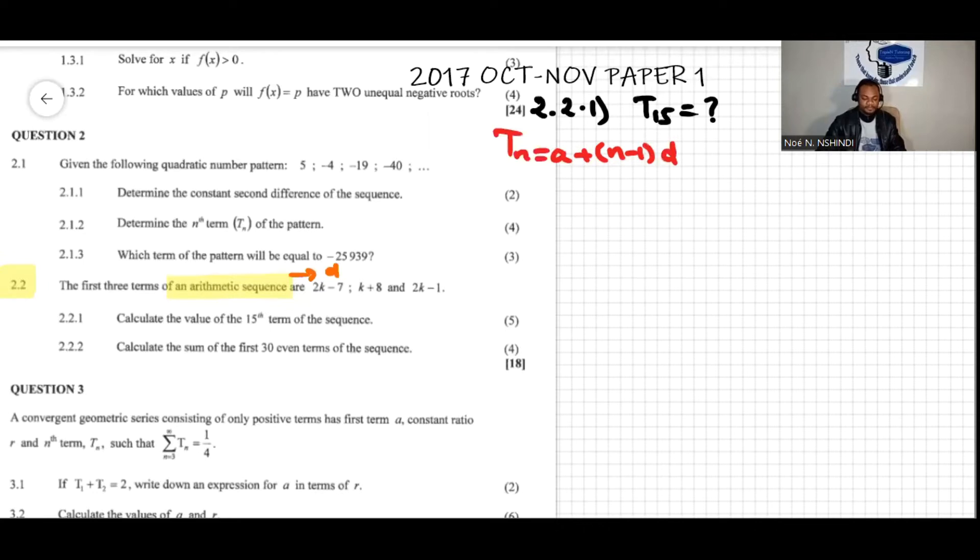The terms are 2k minus 7, k plus 8, and 2k minus 1. Those are the first three terms of the sequence. Because the arithmetic sequence has a constant difference, meaning the difference between the two terms will be equal.